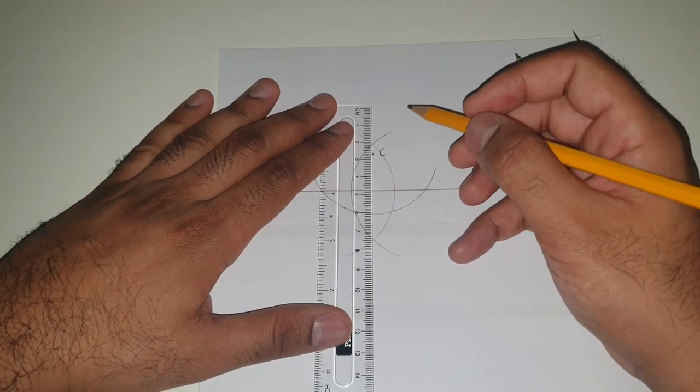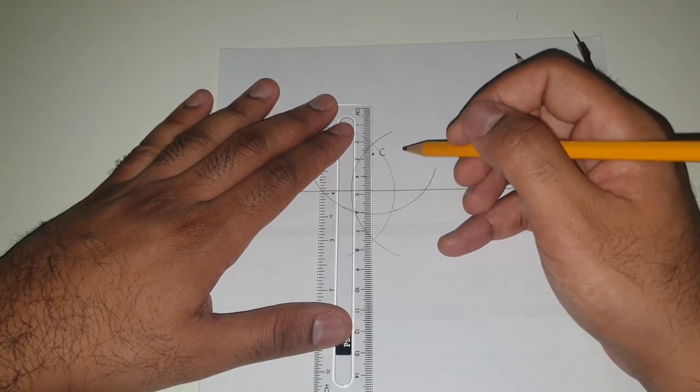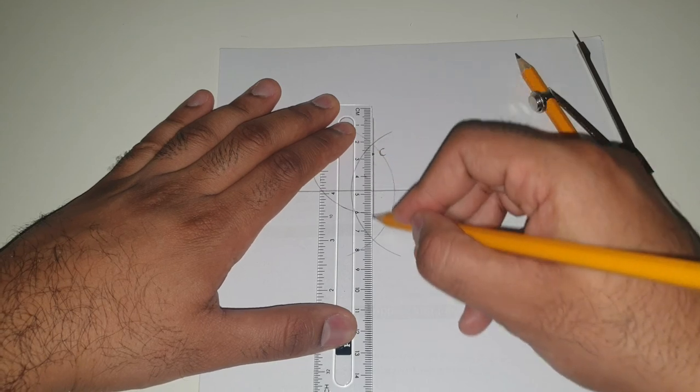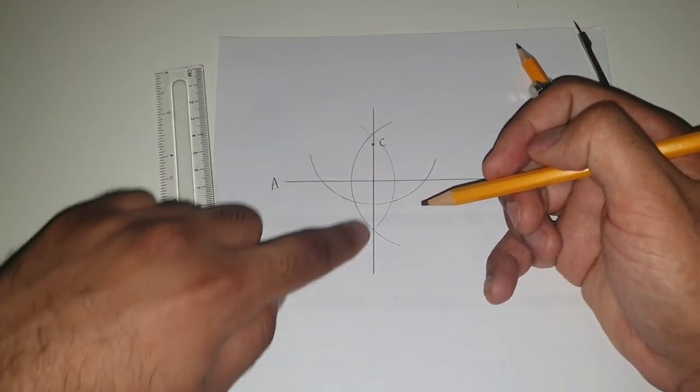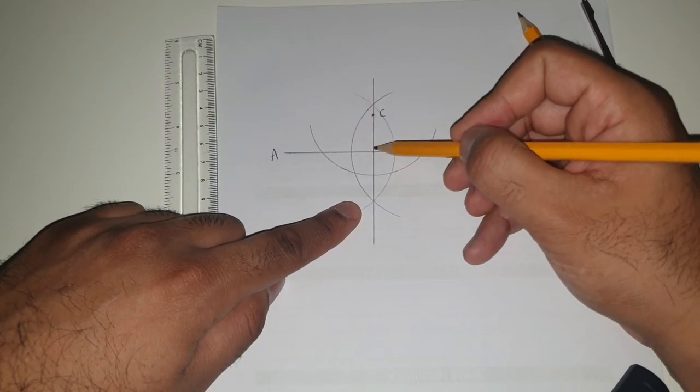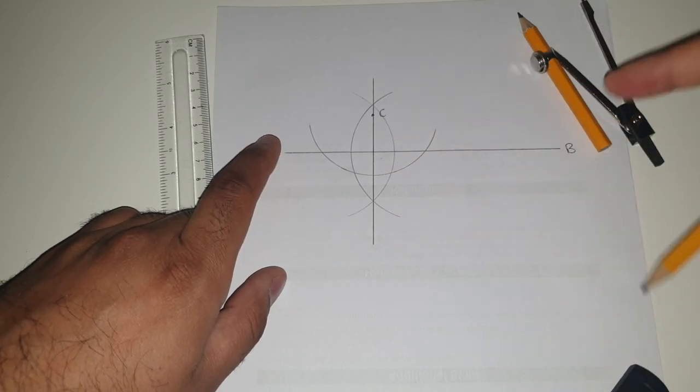If you draw a line joining the two intersections together, you'll see that it passes through point C and intersects the original line AB.